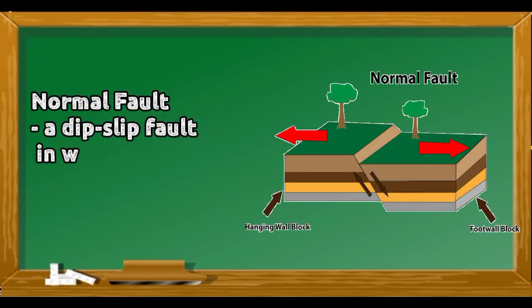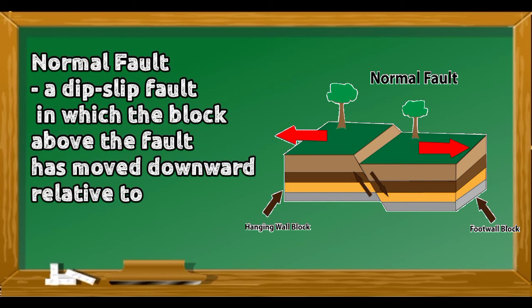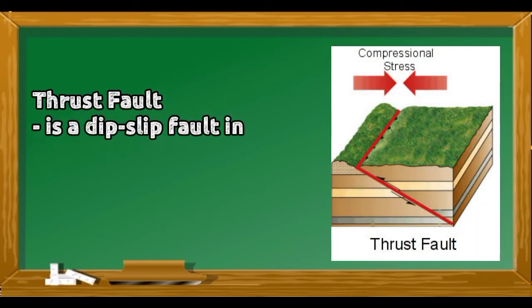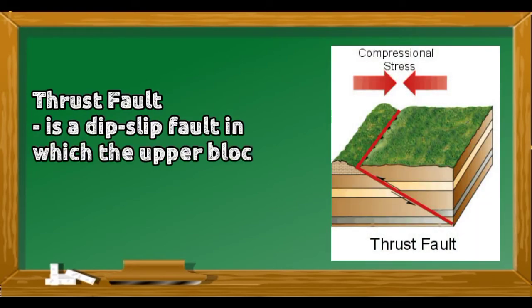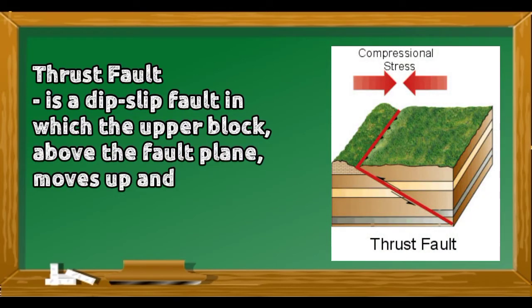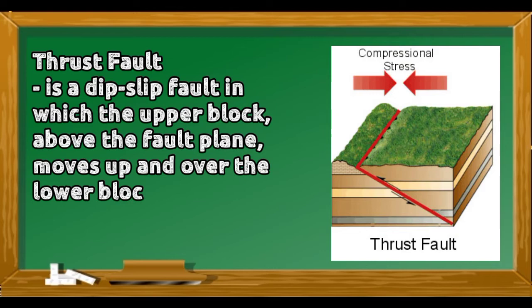Normal Fault: a dip-slip fault in which the block above the fault has moved downward relative to the block below. Thrust Fault: a dip-slip fault in which the upper block above the fault plane moves up and over the lower block.